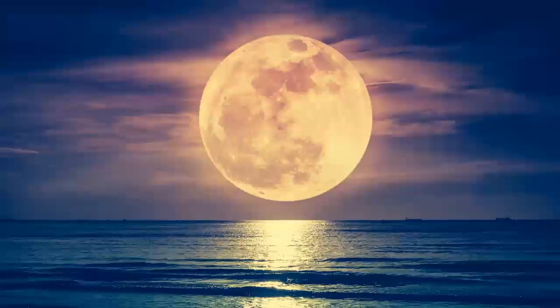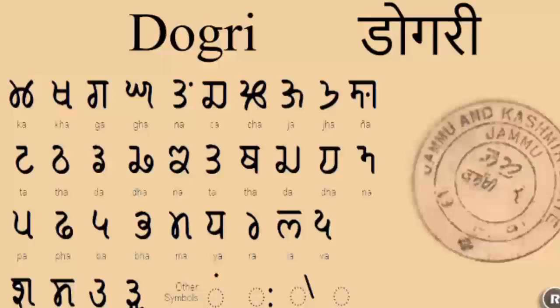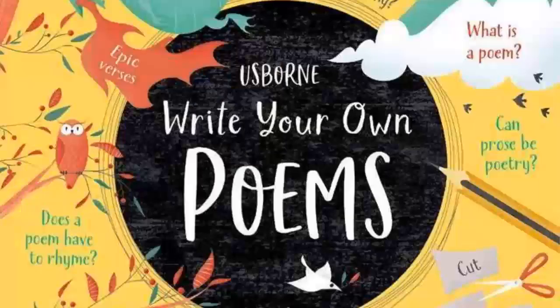Dogri language is spoken in Jammu and Kashmir, the northern part of India, and it is a dialect of Punjabi language. Punjabi is spoken in Punjab and Dogri is spoken in Jammu and Kashmir. This poem is originally written in Dogri language, and Sunil Sharma, a well-known poet and translator, has translated this poem into English.